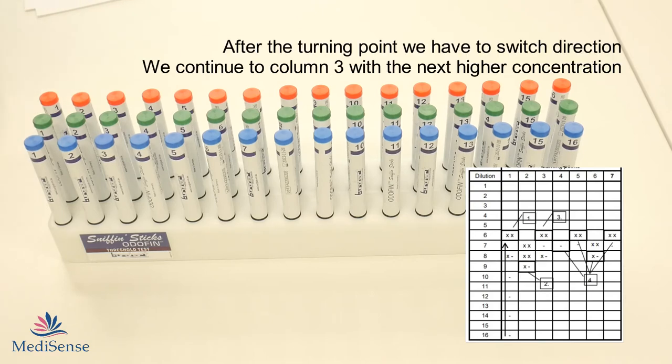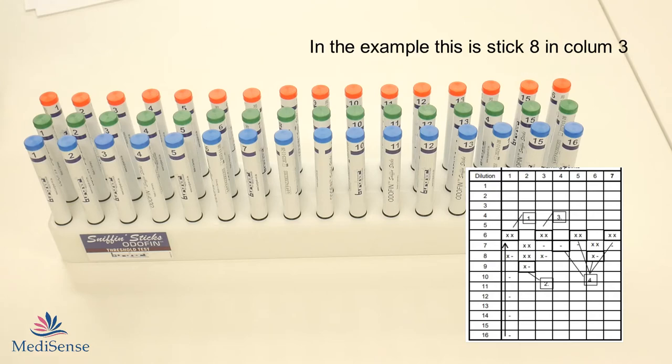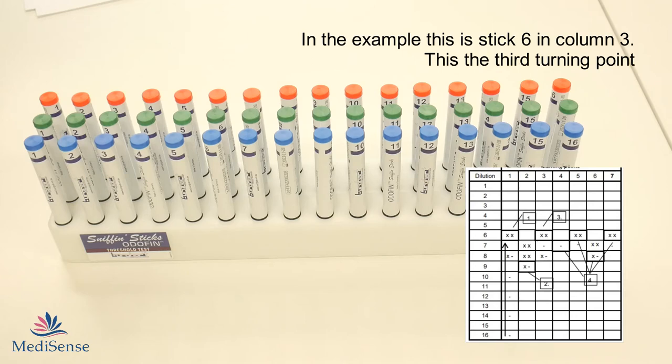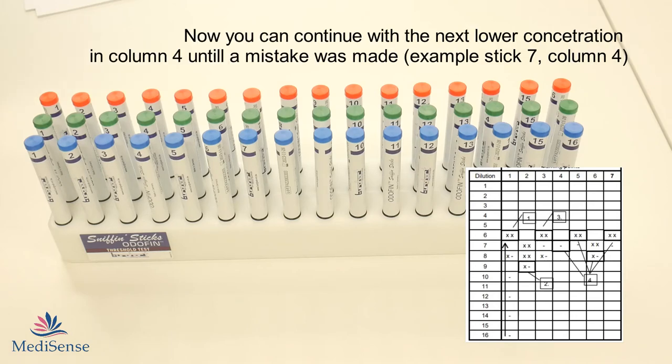That is the second turning point and then you continue to the third row. Now you go up to the next higher concentration. So not 9 but 8. You continue until the test person identifies the sticks twice in a row.